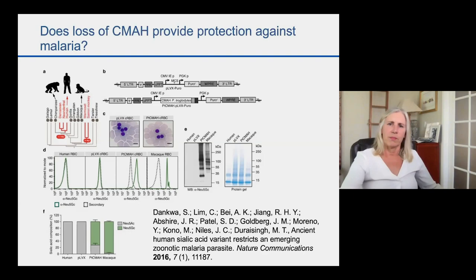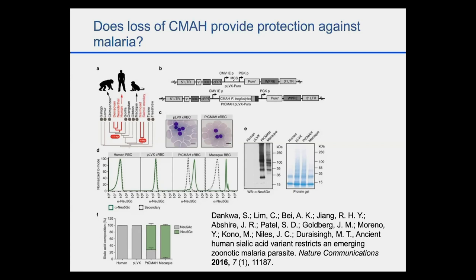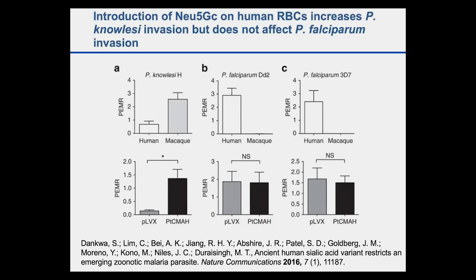Manoj and colleagues wanted to test whether switching in the macaque CMAH would allow the monkey parasite to replicate in human erythrocytes. To do this, they took human erythrocyte stem cells, added the macaque CMAH, and showed that these modified human erythrocytes expressed sialylated proteins similar to what you would see on the surface of macaque erythrocytes. Even without a complete gene replacement, many of the glycoproteins were now sialylated. They then found that expressing macaque CMAH on human erythrocytes did result in much better replication of P. knowlesi in human erythrocytes.